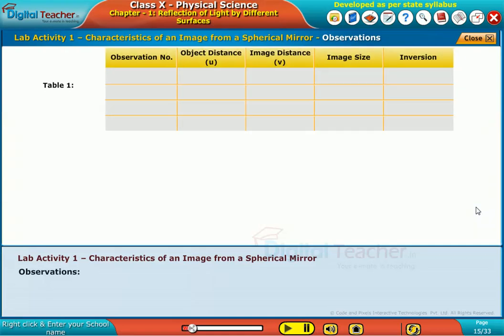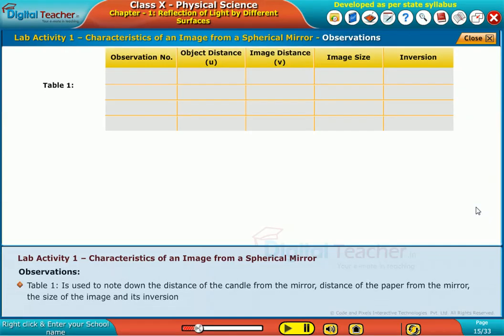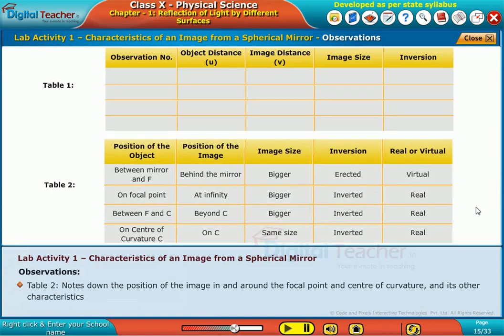As part of our observation, table one is used to note down the distance of the candle from the mirror, distance of the paper from the mirror, the size of the image, and its inversion. Table two notes down the position of the image in and around the focal point and center of curvature and its other characteristics.